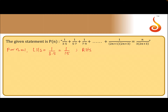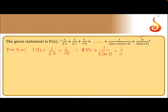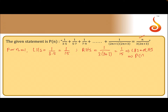On the RHS, substitute n=1: 1 divided by 3 multiplied by (2+3), which gives 1/15. So LHS equals RHS, which means the statement is true for n=1.